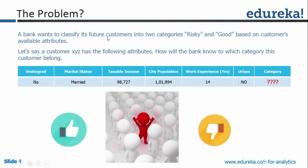A bank wants to classify its future customers into two categories: is a particular customer risky, and should I reject a loan for them, or is this customer a good customer? It's based on a few customer attributes. Say you have a customer XYZ — he's an undergrad, married, has a taxable income of a certain amount, a city population of so much, work experience of 14 years, and is not from an urban area. How do you categorize him as risky or good?